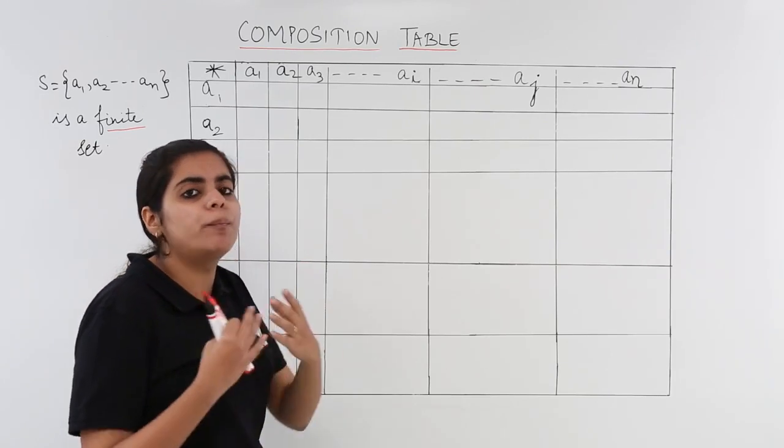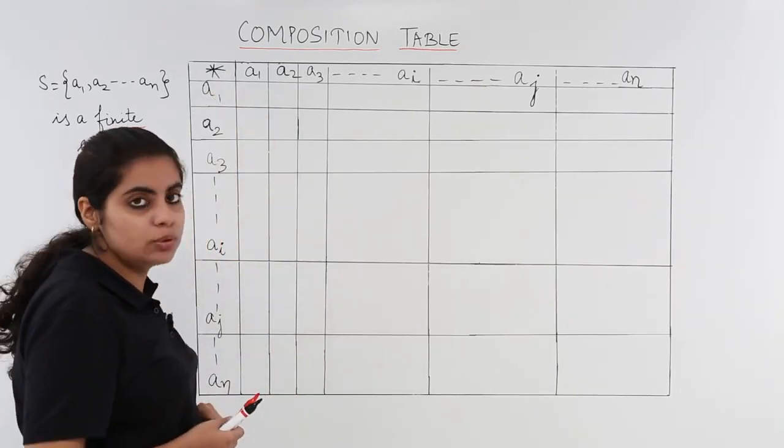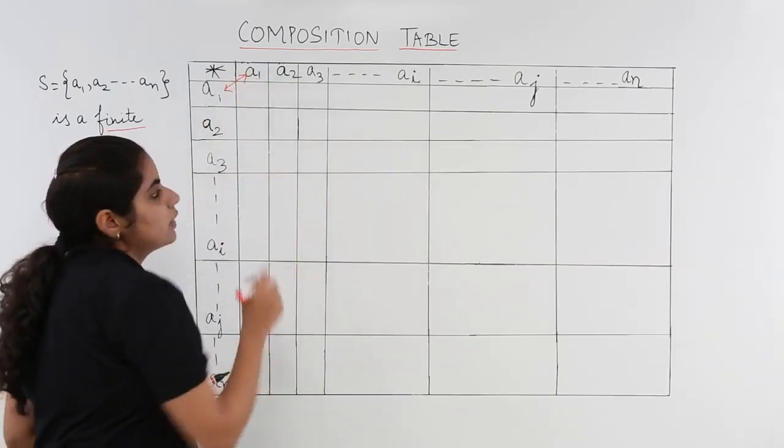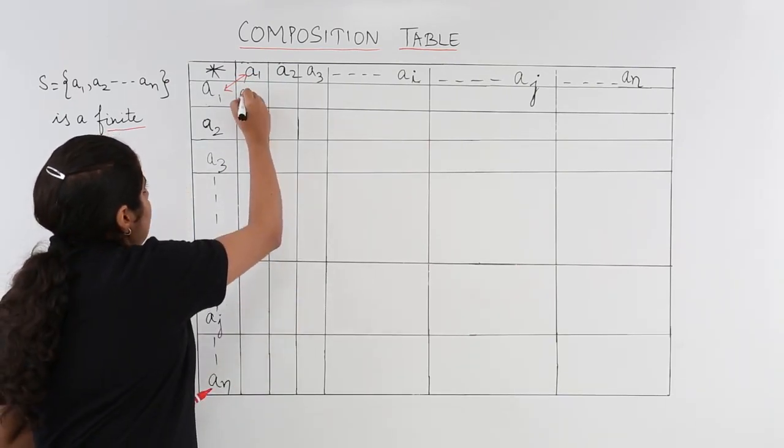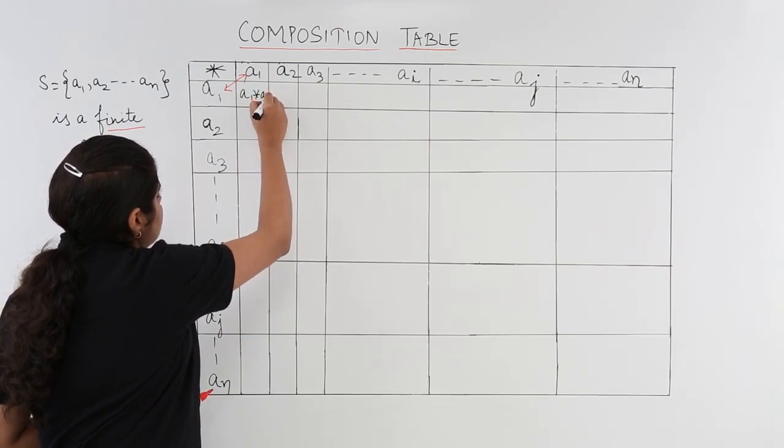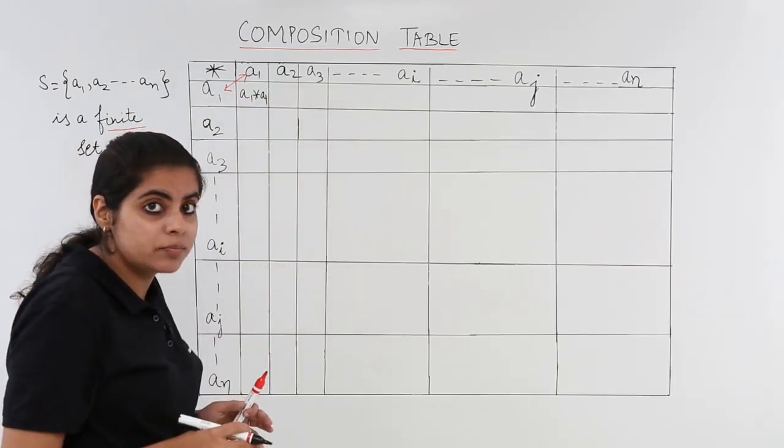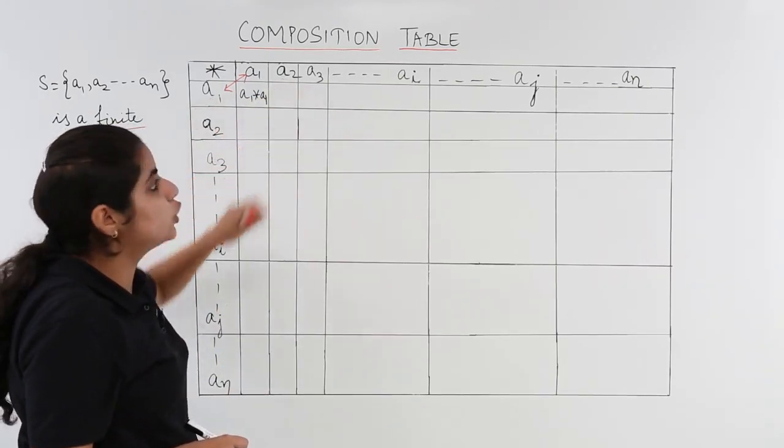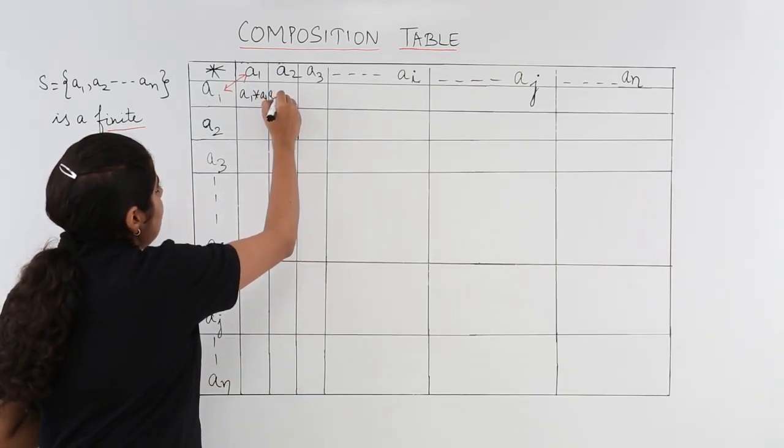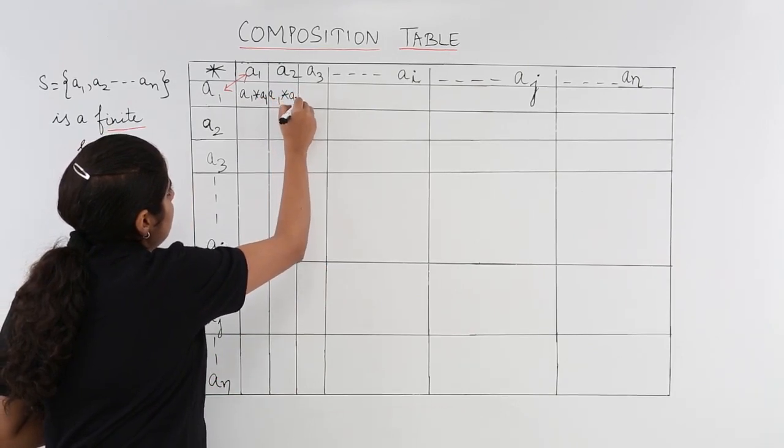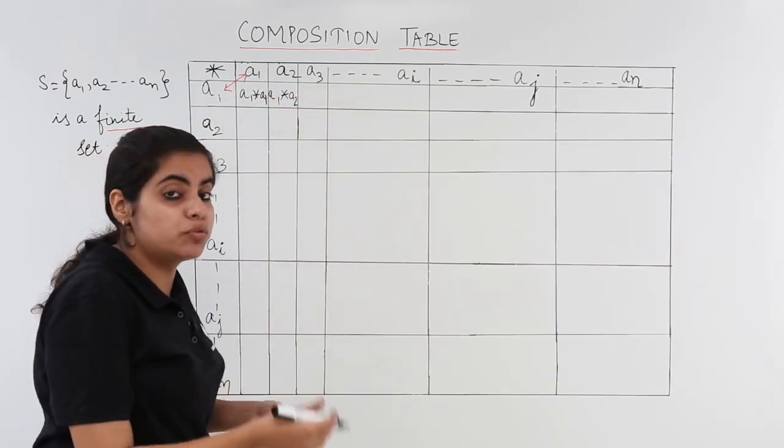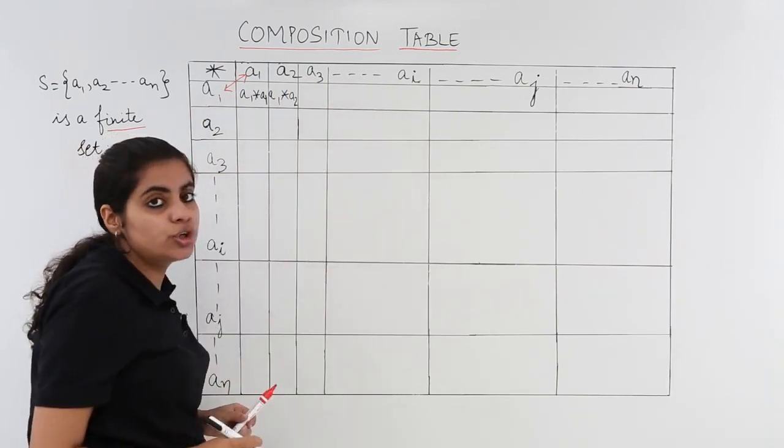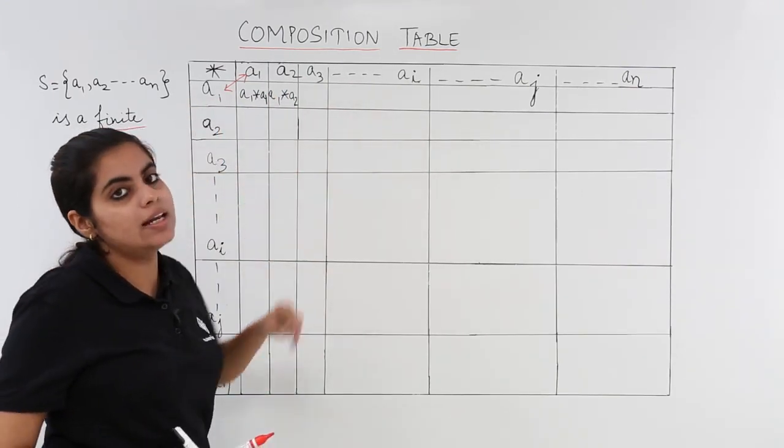Now whatever operation is given to me, it is denoted as star. What we do is we treat a1 with a1, so it becomes a1 star a1 in the first box. In the next box, you have to treat a1 with a2, so a1 with a2 gives me a1 star a2. Similarly, you move forward and make a1 star a3, and it goes on to a1 star ai.